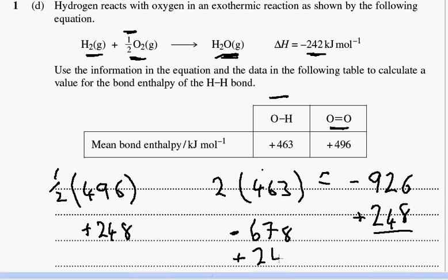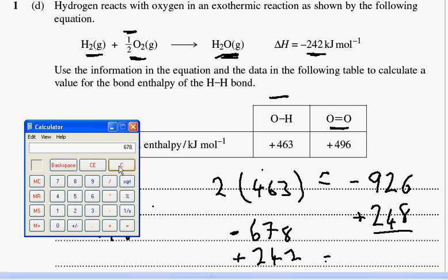So what do I end up with there? 678 and I'm going to subtract. We've got to be careful because I'm bouncing about with signs in my head. So 678, I'm going to take away 242 kilojoules of energy. And that leaves me with - let's just minimize this calculator - 436.